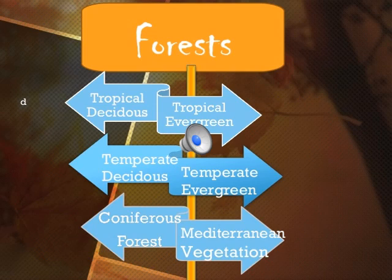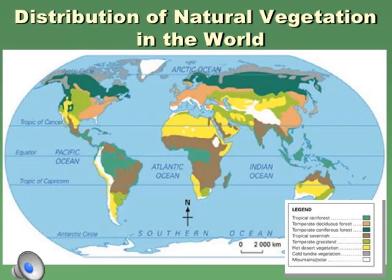The different types of forests found in the world are: tropical deciduous forest, tropical evergreen forest, temperate deciduous forest, temperate evergreen forest, coniferous forest, and Mediterranean vegetation. We will study each one separately. First, have a close look at the world map showing the distribution of natural vegetation — where tropical rainforest is, where temperate deciduous forest is, and where temperate coniferous forest is, each marked with different colors.